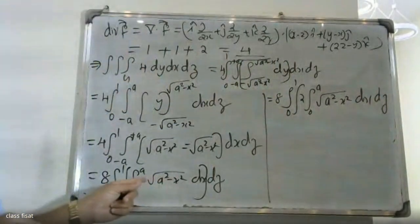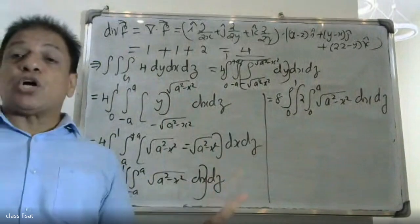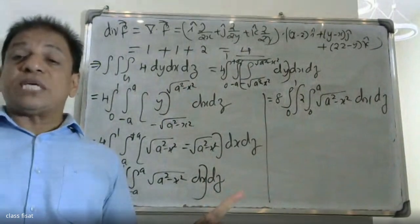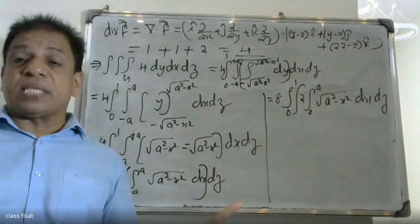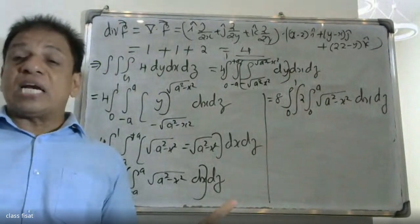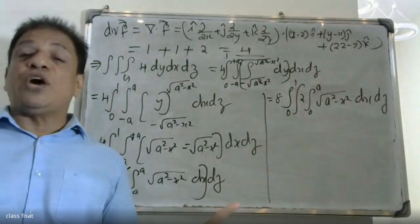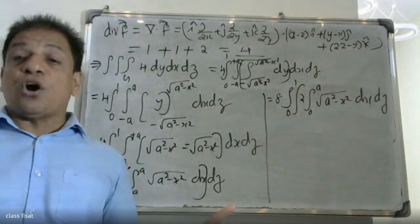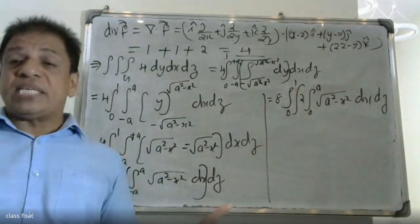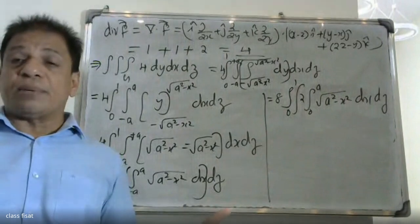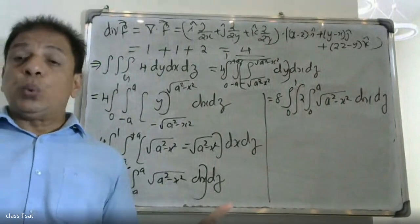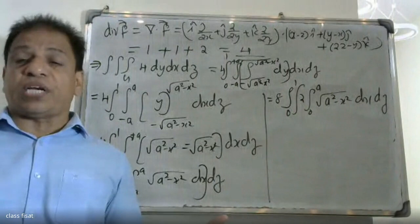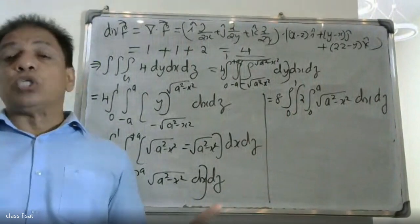By the property of definite integrals: the integral from minus a to plus a of f(x) dx equals 2 times the integral from 0 to a of f(x) dx, when f(x) is an even function. The function root of (s squared minus x squared) is an even function.